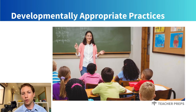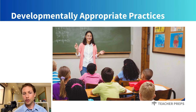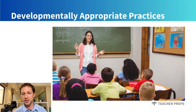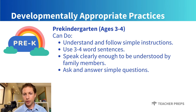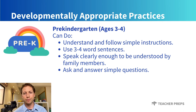For your exam, you will likely be asked to demonstrate your understanding of typical and atypical language abilities for students from pre-K through fourth grade. In pre-kindergarten, ages three to four, students can typically understand and follow simple instructions, use simple three-to-four-word sentences, and speak clearly enough to be understood by family members and teachers. They can also ask and answer simple questions.